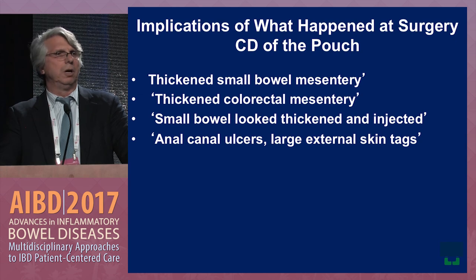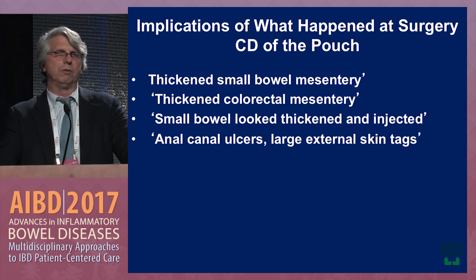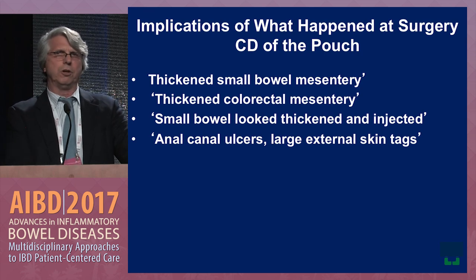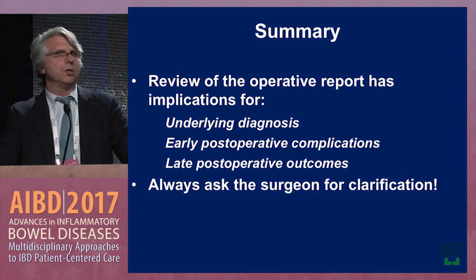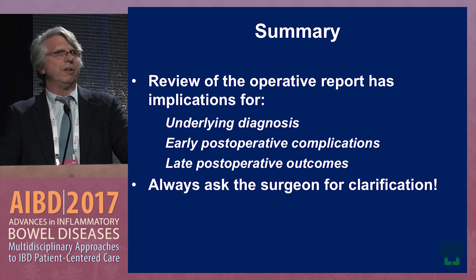The most feared long-term complication is Crohn's disease of the pouch. Signs in the op report are again similar: thickened small bowel mesentery, thickened colorectal mesentery, small bowel appearing thickened and injected — which should look completely normal in UC — and evidence of perianal disease. In summary, review of the operative report has implications for underlying diagnosis, management of early and late post-operative complications. Ask the surgeon for clarification; your surgeon should be intimately involved in care and available to answer what happened in the OR at any time.